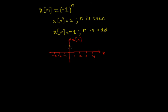First, consider n = 0: (-1)^0 = 1. For n = 1 (odd), x[n] = -1. For n = 2 (even), x[n] = 1. For n = 3, x[n] = -1. For n = 4, x[n] = 1, and so on.